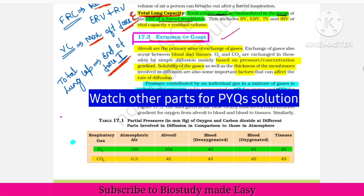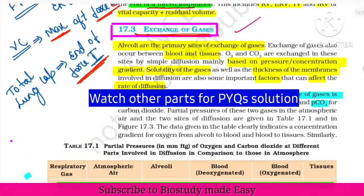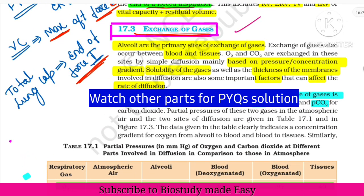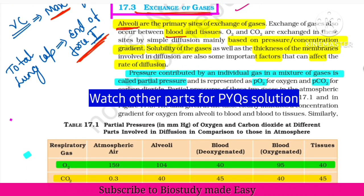Next, exchange of gases — this happens in two places: between the alveoli and blood, and between blood and tissues. First is the alveoli-blood gas exchange, and second is the exchange between blood and body tissues.